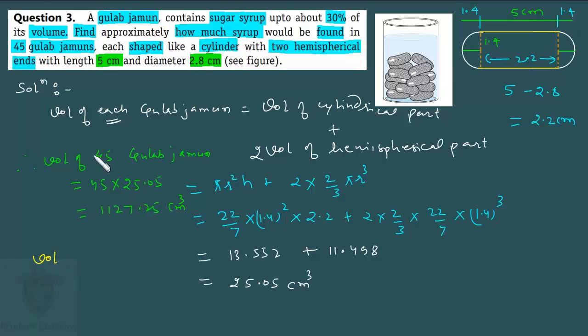So we have - let me write below - we have volume of sugar syrup as 30 percent of volume of Gulab Jamun. Meaning total 45 Gulab Jamuns - this was given in the question.